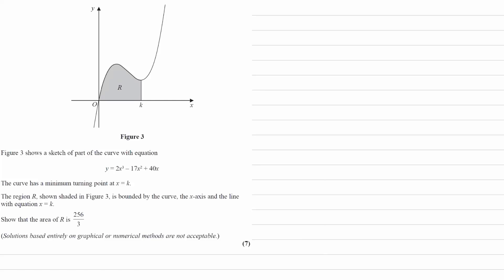Figure 3 shows a sketch of part of the curve with equation y equals 2x cubed minus 17x squared plus 40x. We're told the curve has a minimum turning point at x equals 3, and then we're told the region R is shown in the diagram.